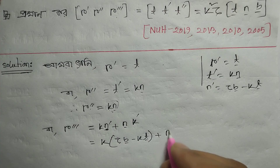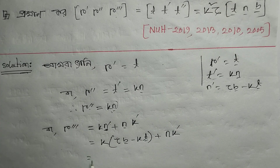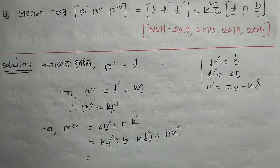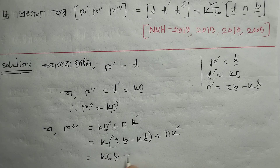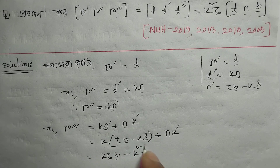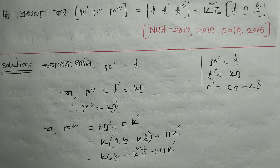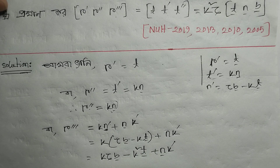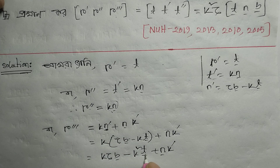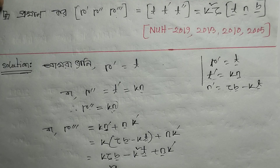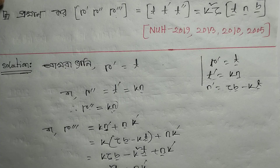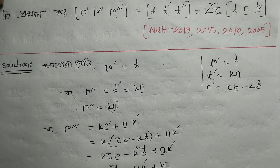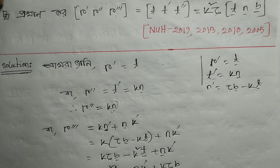Now N prime, kappa prime — substituting N prime equals tau*B minus kappa*T into the expression: we get kappa*tau*B vector plus minus kappa squared T vector plus N*kappa prime. Collecting terms in T, N, B order: minus kappa squared T, then N kappa prime, then plus kappa*tau*B vector.